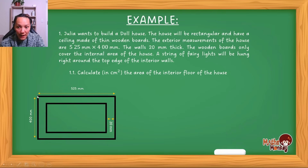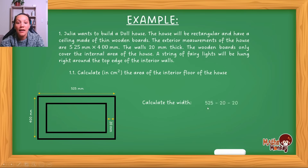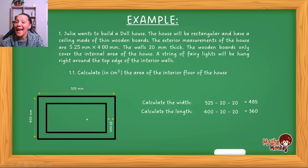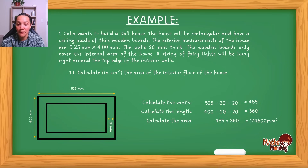Looking now, you see that the width is 525. But this 20 here and this 20 here — if I subtract them from 525, that gives me the interior length. The difference between the exterior and interior lengths is just the two 20mm walls on the sides. So I say 525 minus 20 minus 20, which gives me 485 millimeters. I do the same for the length: 400 minus 20 minus 20 gives me 360. I now have the length and breadth of the interior rectangle, and I can do the area calculation — length times breadth — which gives me 174,600 millimeters squared.